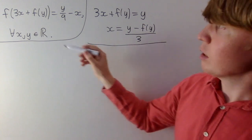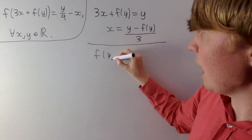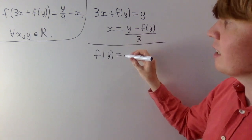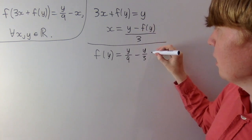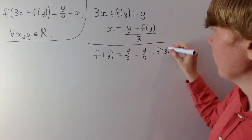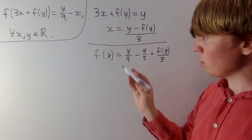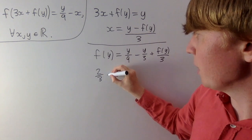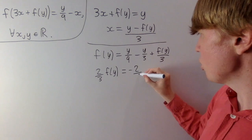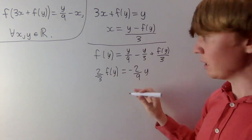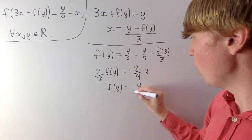We've chosen this so that 3x plus f(y) can be replaced by y. So we get f(y) on the left-hand side. Then on the right-hand side, we have y over 9 minus x, so minus y over 3, then plus f(y) divided by 3. Now we just solve this equation — it's a linear equation in f(y) and y. So we get minus 2/9 y, then multiply by 3 and divide by 2 on both sides. You get f(y) is equal to minus y over 3.